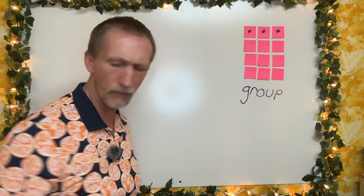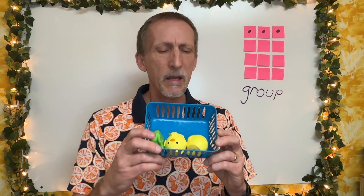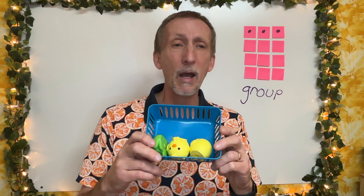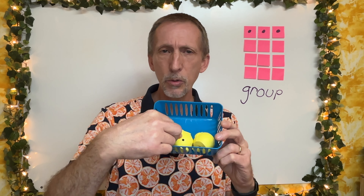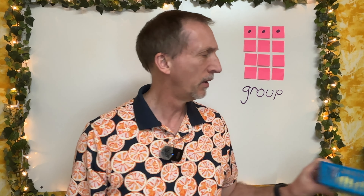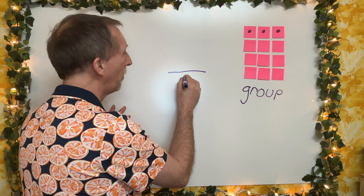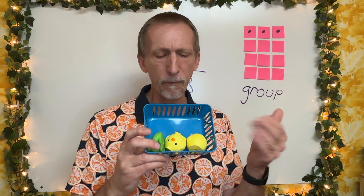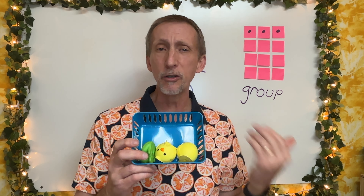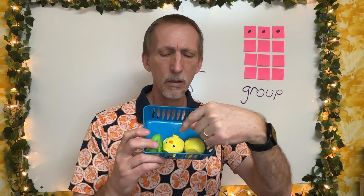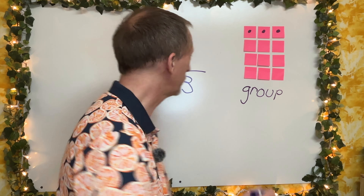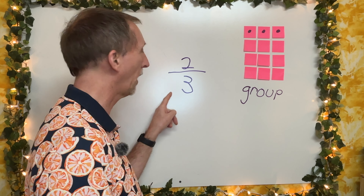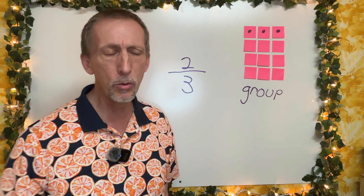Let's look at another group — this is the one with the chicks and the frog. How many things are in this group all together? Let's count them: one, two, three. So we had three things all together. We'll make our fraction bar and the bottom number will be three. Looking at our group again, let's focus on the chicks and count how many chicks there are: one, two. There are two chicks. So our top number is going to be two. That means I'm focused on two things out of a group of three.